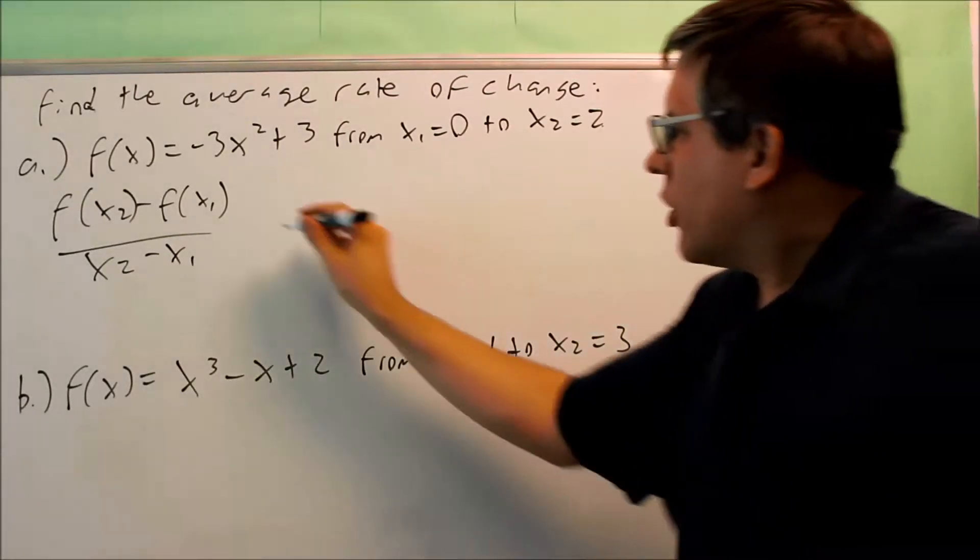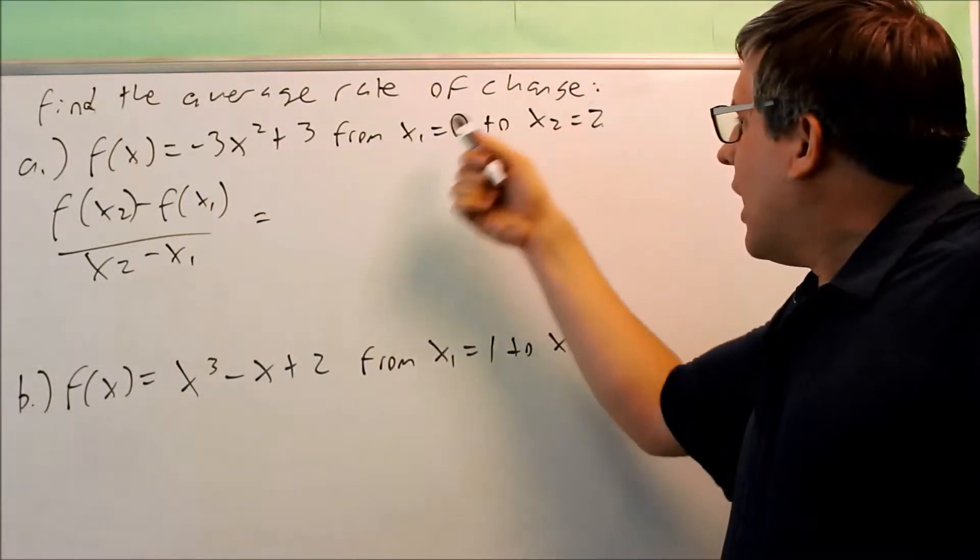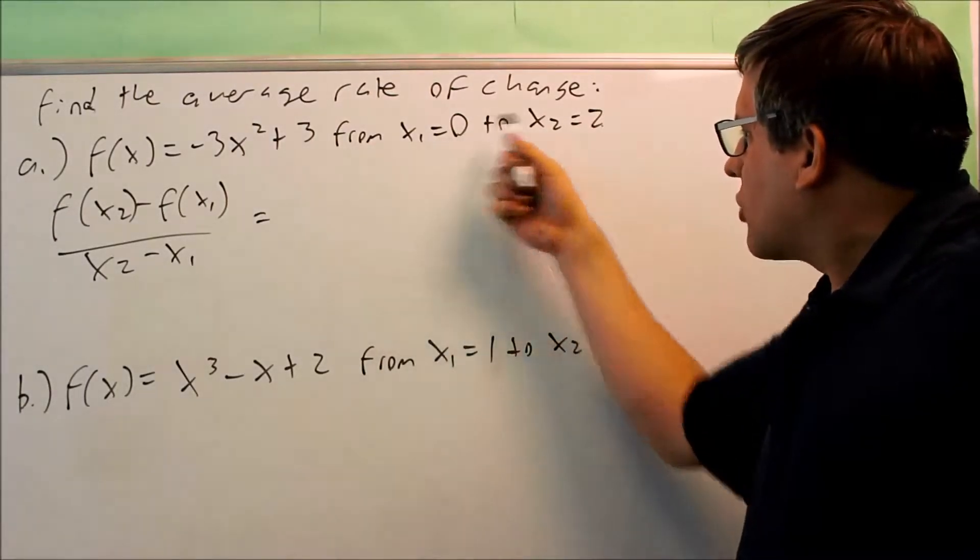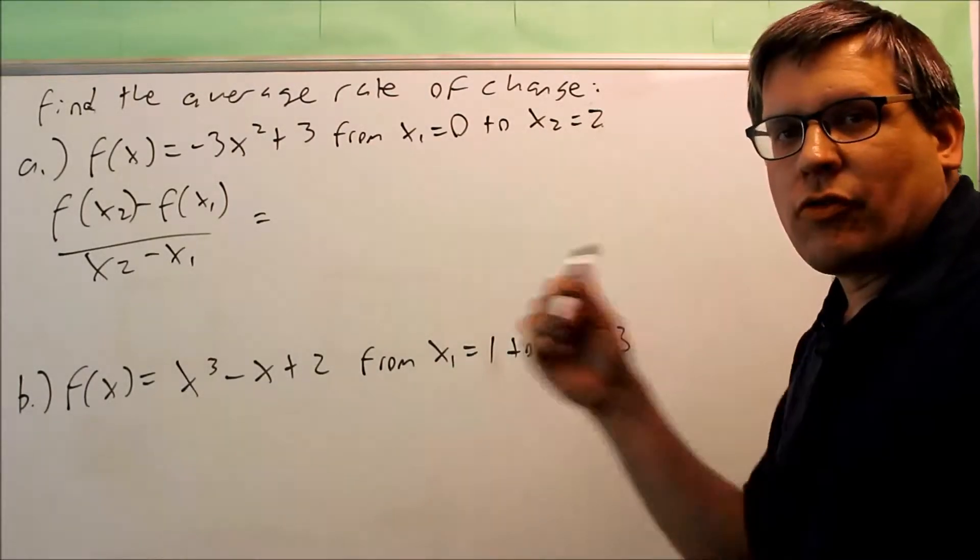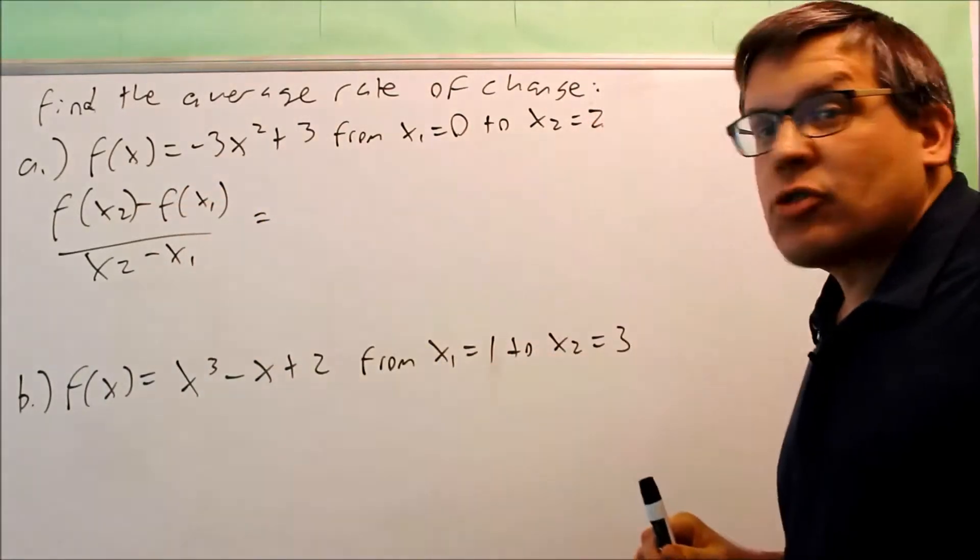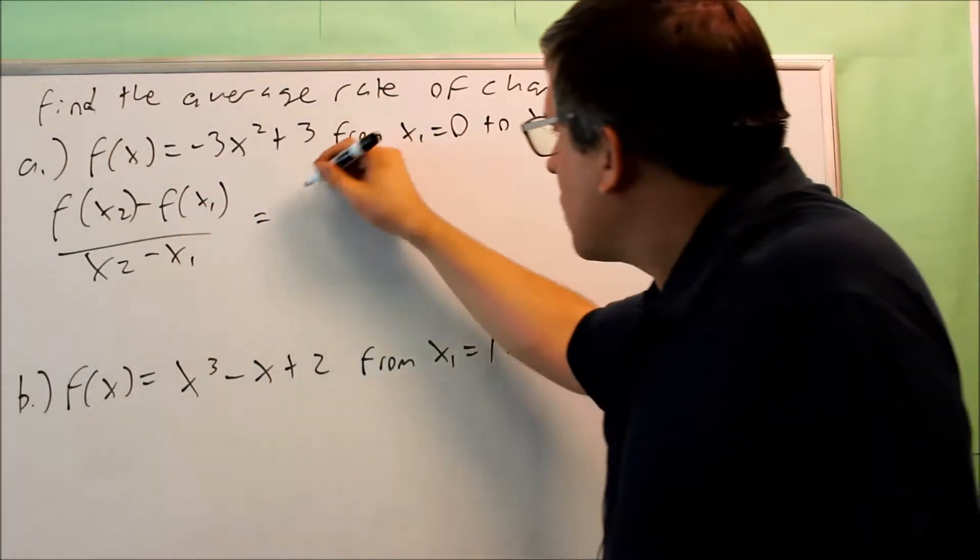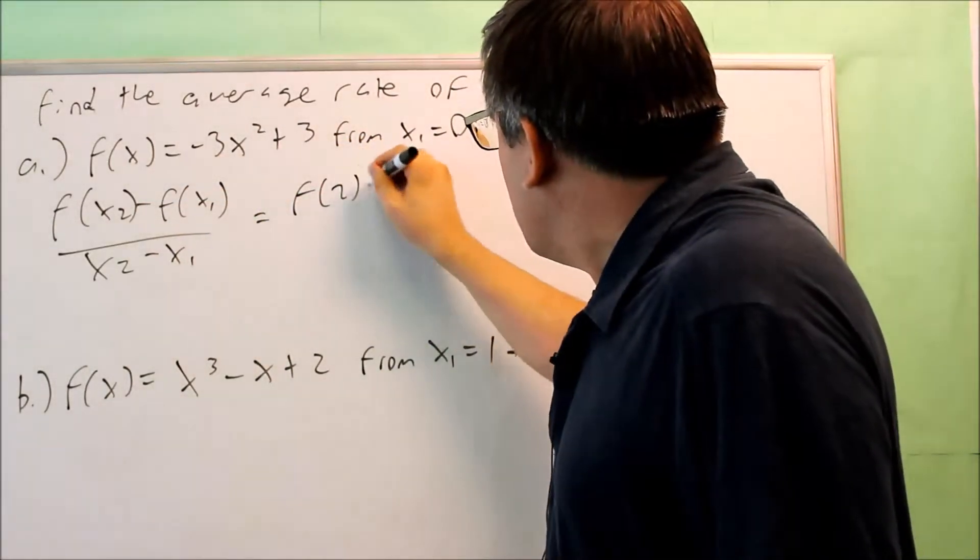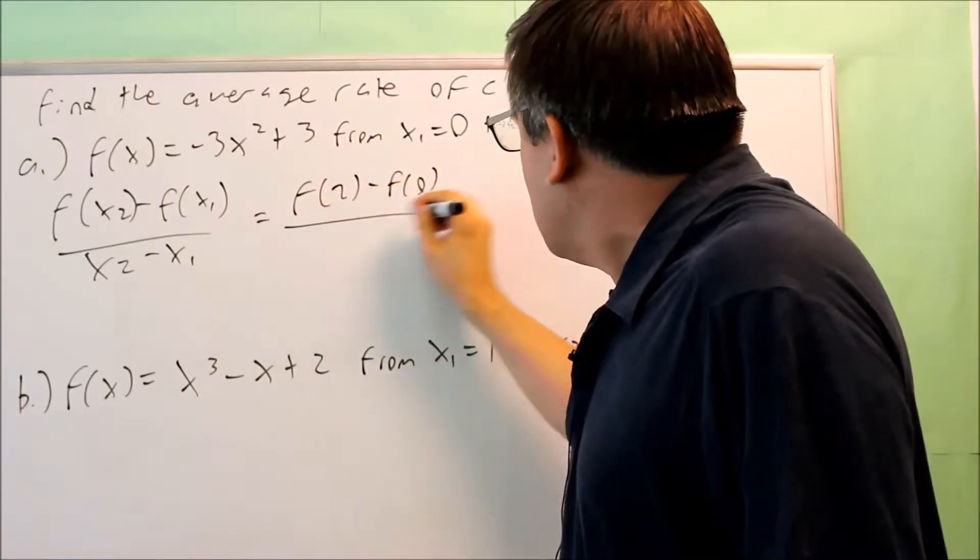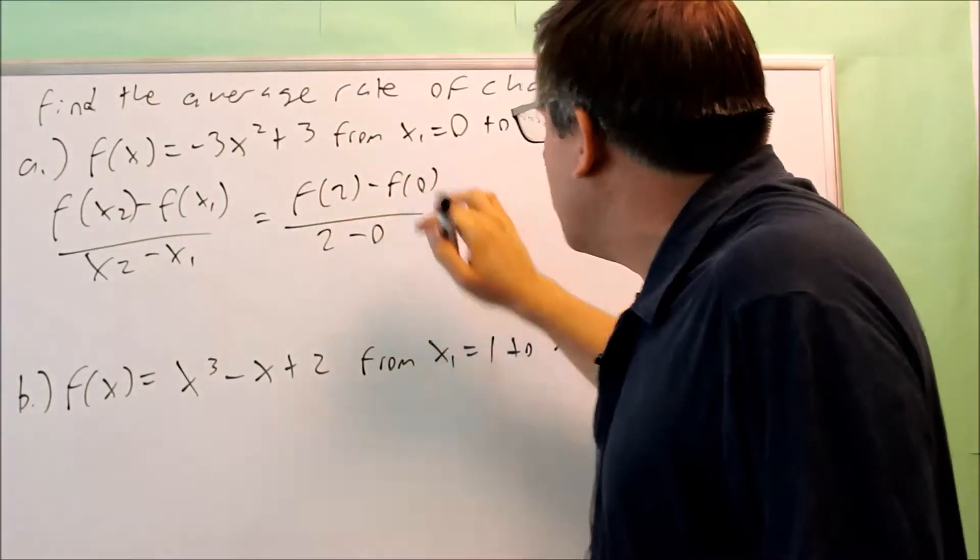So the way this works is you're going to put in the values. We have values given for x1 and we have values for x2. So the first step would be to plug them into the average rate of change formula. So we're going to do f of 2 minus f of 0 over 2 minus 0.